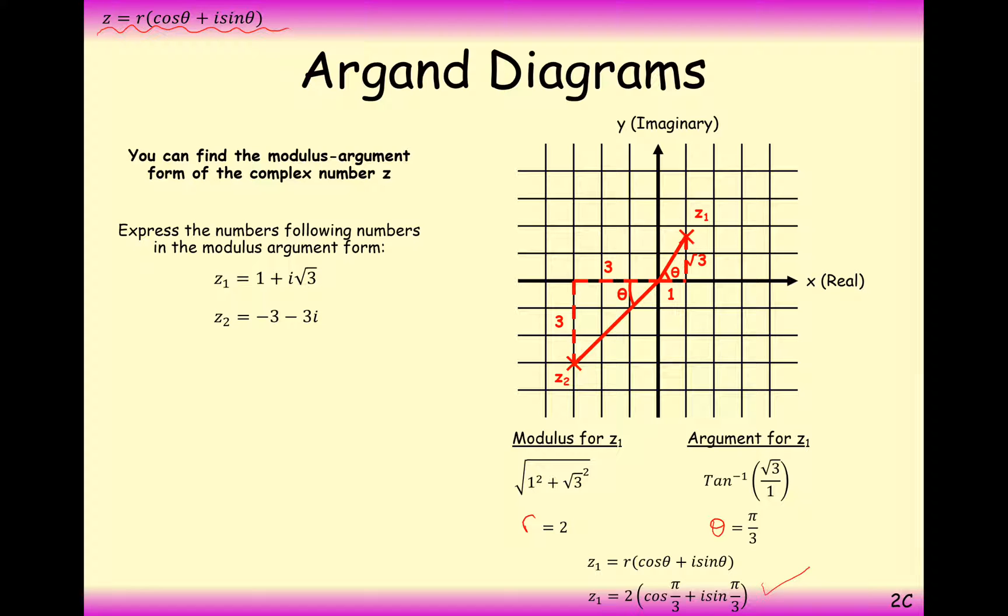That is the complex number z1 written in argument modulus form, or modulus argument form. 2 being the modulus on the front, theta is replaced by pi over 3, which is the argument.